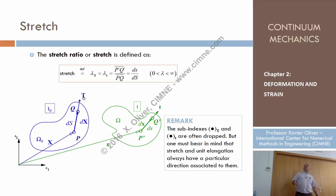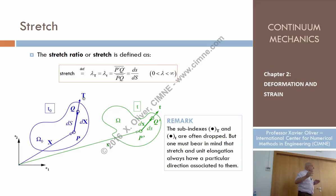That vector, which is here capital T: imagine that I have a particle P, a particle Q, and that direction that joins particle P and Q is defined by a unit vector — modulus 1. Not infinitesimal, a unit vector that is specified in the direction defined as capital T. So now, let's consider particle P and the stretch we are defining — the stretch in point P in the direction T.